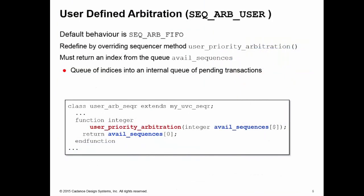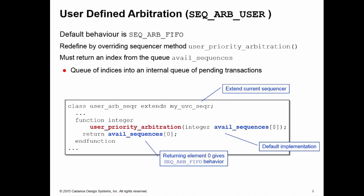The user-defined arbitration scheme, by default — if you set this as the arbitration scheme of your sequencer — the default behavior is SEQ_ARB_FIFO, which is the default arbitration scheme for a sequencer anyway. You can redefine the behavior of this by overwriting the sequencer method user_priority_arbitration. This method must return an index from a queue called avail_sequences, which is a queue of indices into another internal queue — a queue of the pending transactions. Typically, you'd extend the current sequencer, redefine the user_priority_arbitration method, and return one of the elements from the avail_sequences queue. The default implementation returns element 0, which is the first item in the queue — the next transaction to be processed in order — matching SEQ_ARB_FIFO behavior.